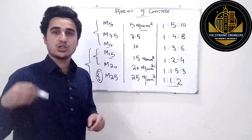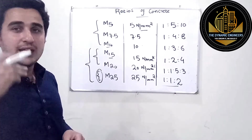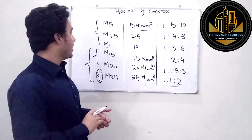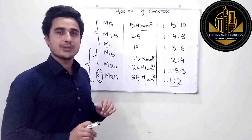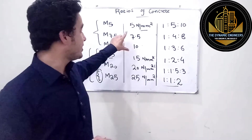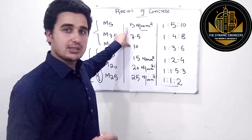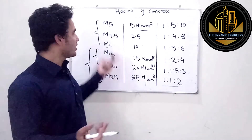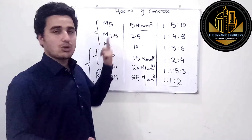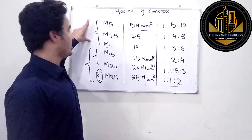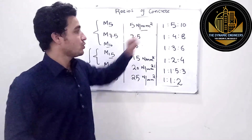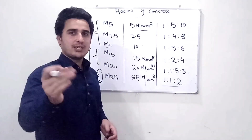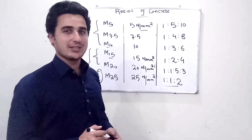These values — M15, M20, and M25 — are important because you will use them in fieldwork, and they are also commonly asked in interview questions. The lower grades are used for lean purposes. I hope you learned something from this table. If you did, don't forget to subscribe to our channel. Thank you very much.